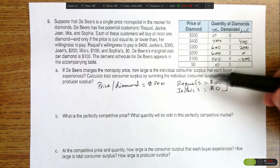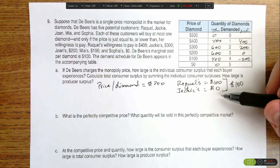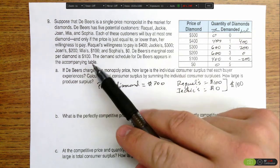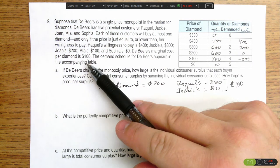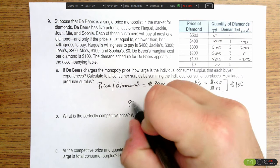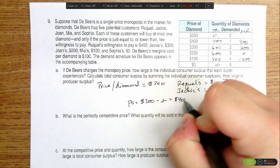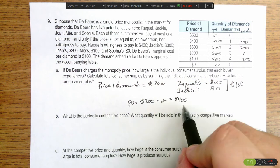When it comes to producer surplus, we know that De Beers is willing to sell them for $100, that's their marginal cost. They get to charge $300, so there's $200 in producer surplus. $200 per diamond times two diamonds that they sell means that producer surplus in this market is $400.